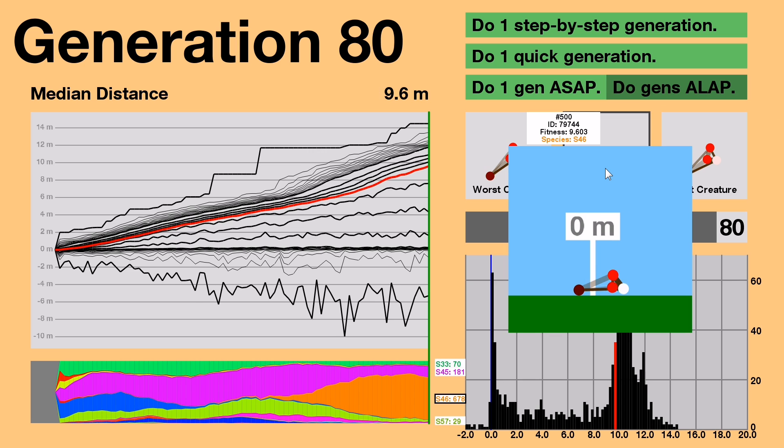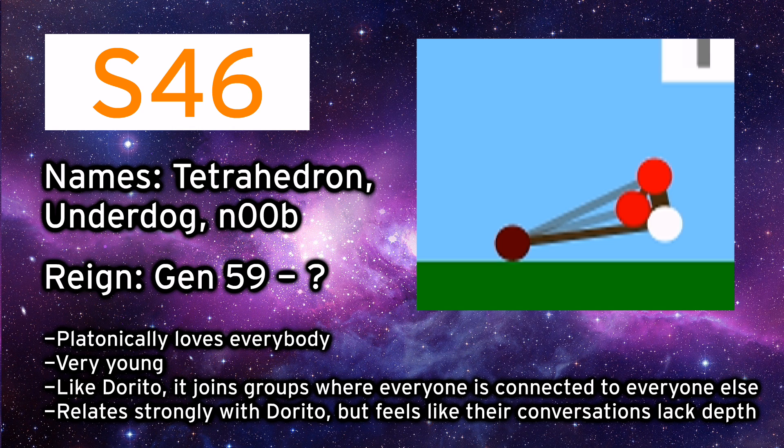The successful S4-6 species is slowly but surely refining itself, bringing the median distance to almost 10. I guess we'll call it the tetrahedron because that's what its structure resembles.